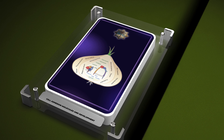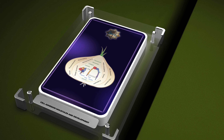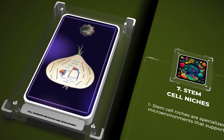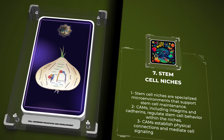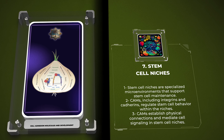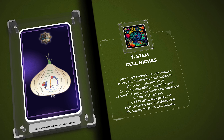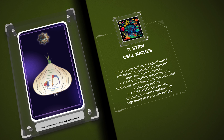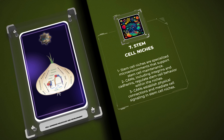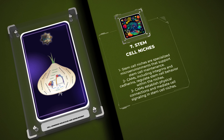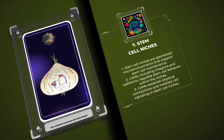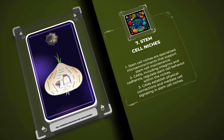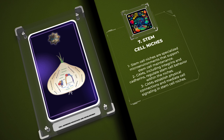Stem cell niches are specialized microenvironments that support the maintenance and self-renewal of stem cells. CAMs, including integrins and cadherins, play key roles in regulating stem cell behavior within these niches. These adhesion molecules establish physical connections, mediate cell signaling, and help maintain the balance between stem cell quiescence and activation. Understanding CAM-mediated stem cell niche interactions is vital for regenerative medicine and tissue engineering.